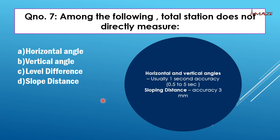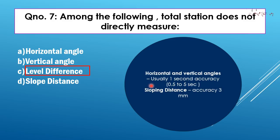Seventh question: Total Station does not directly measure level difference. Total Station measures horizontal and vertical angles with accuracy typically between 0.5 to 5 seconds — usually about 1 second, which is very accurate. Distance accuracy is usually 3mm. Level difference is not directly measured by the Total Station.